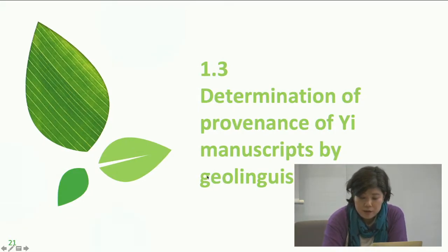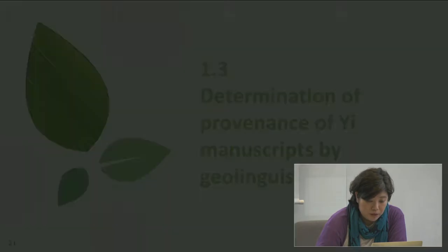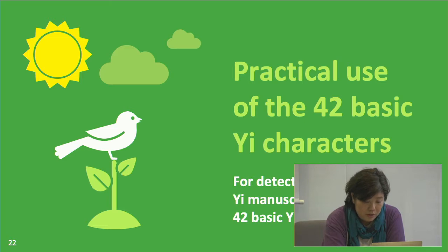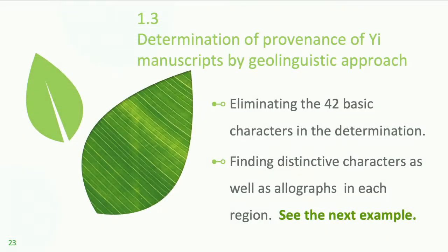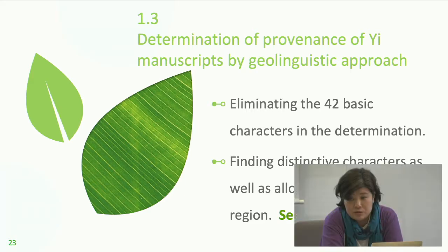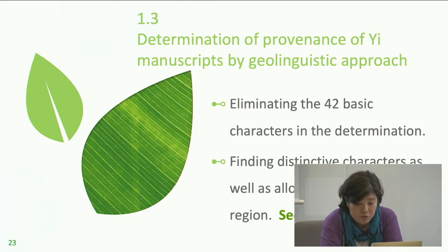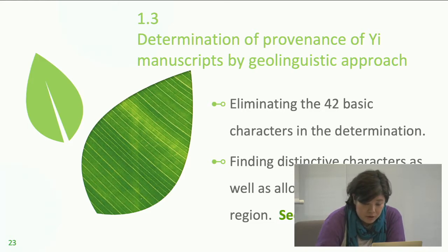In this section, I will talk about the practical use of the basic characters — for example, in determining the provenance of E manuscripts. The procedure for detecting provenance of an E manuscript is very simple. First, we eliminate the 42 basic characters — we do not have to take them into intensive consideration, though it depends. Then the next step is to find out distinctive characters, including allographs in each region, which can be found quite easily by the E character maps, as we just saw in the A-B distribution map.